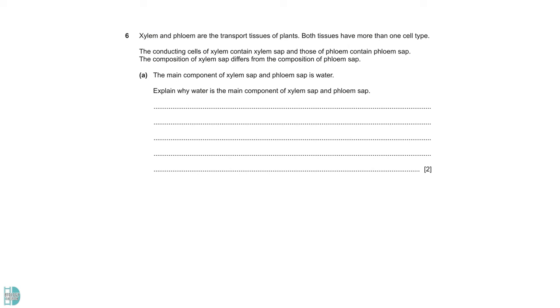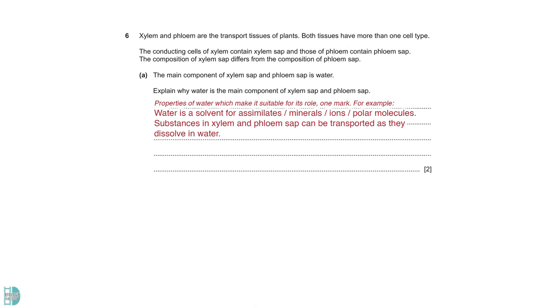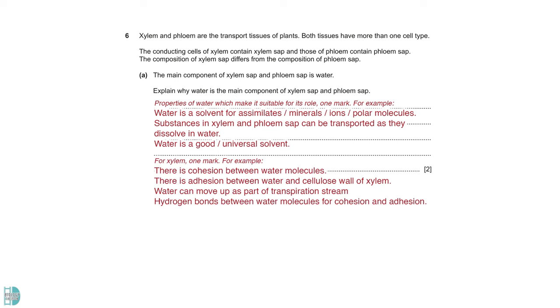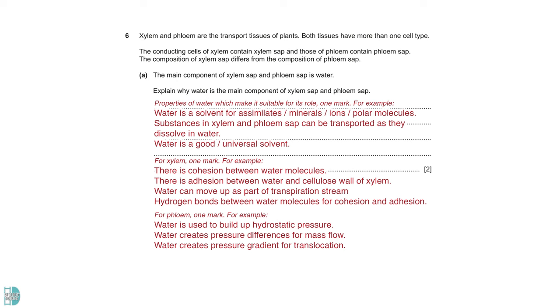Question 6 gives you some information on xylem and phloem. In part A, you have to explain why water is the main component of xylem sap and phloem sap. First of all, talk about the properties of water, which makes it suitable for this role. Water is a solvent for assimilates or minerals, ions and polar molecules. You can also write this point from the aspect of the substances. They do accept if you just mention that water is a good or universal solvent. Then, there is one mark each when you relate the properties of water to the feature of both of the tissue. For xylem, you can talk about adhesion and cohesion or how it forms the transpiration stream. For phloem, water is important to build up hydrostatic pressure for mass flow or translocation to occur. There is an AVP mark. For example, when you talk about water potential gradient in the correct context.